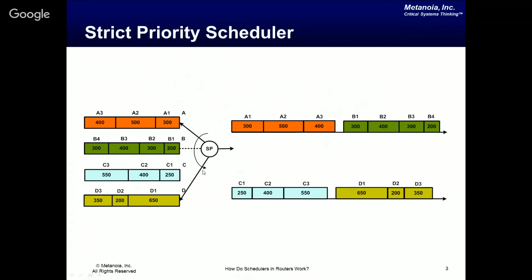With a strict priority scheduler and no future arrivals, it goes to the highest priority queue QA and serves it exhaustively until every packet is served and the queue is empty. Then it serves all four packets of QB, then QC, then QD — the lowest priority. If more packets arrived in B, it would serve that until something arrived in a higher priority queue like QA, at which point it might complete the current QB packet then immediately serve QA.